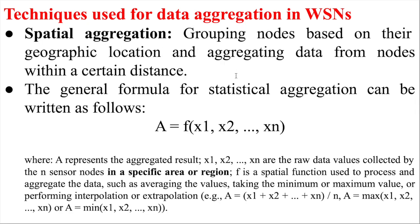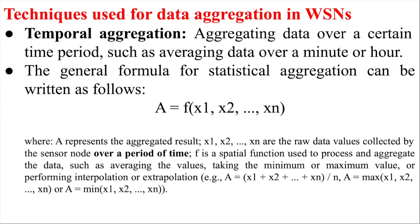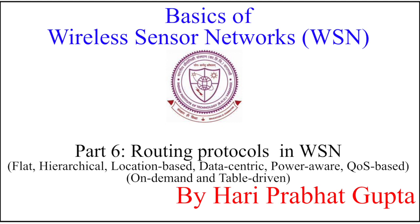But if you have location information and your application is location-sensitive — for example, noise level is location-dependent, or in agriculture where you want to switch on a water pump in one region because the moisture level is very low there — then spectral aggregation is appropriate. Sometimes time is important: if you want to monitor an office, daytime data is much more important than nighttime. In that case, take aggregation or decisions based on only the daytime data, not an average of day and nighttime. It depends on your application and what you are using.